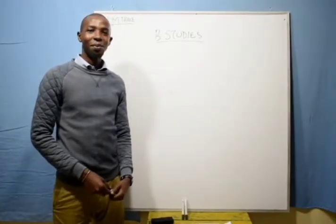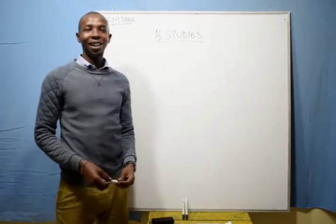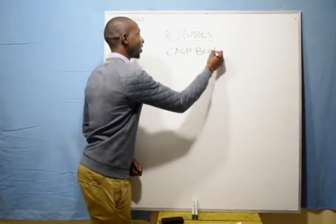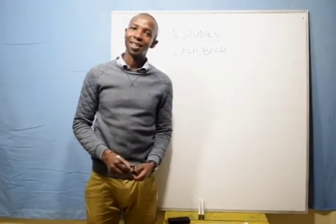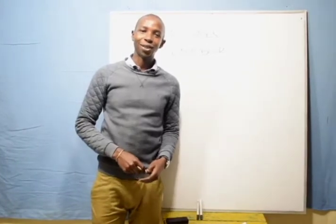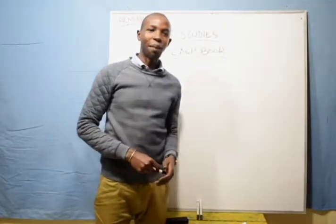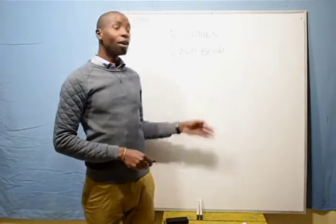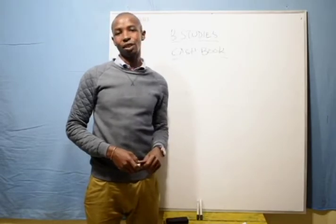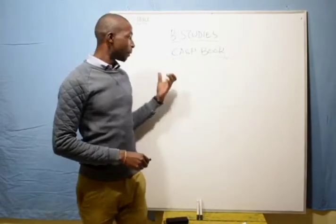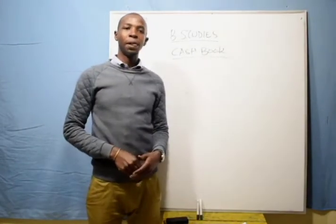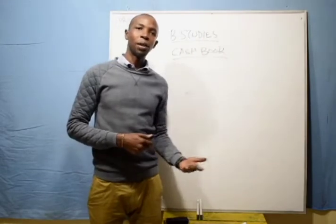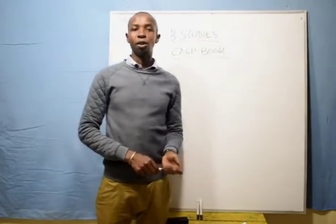Hello students, I hope you are all fine. Today I want to take you through a very interesting topic: the cash book. Cash is all about money — money makes the world go round. A cash book is a special ledger used to record all bank transactions and cash transactions only. The purpose of this cash book is it enables one to see the cash position or bank position of a firm or business at a glance.